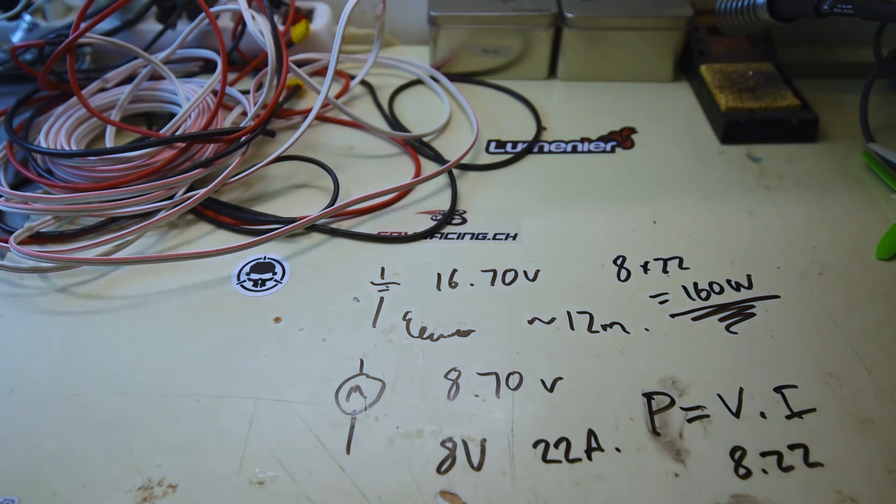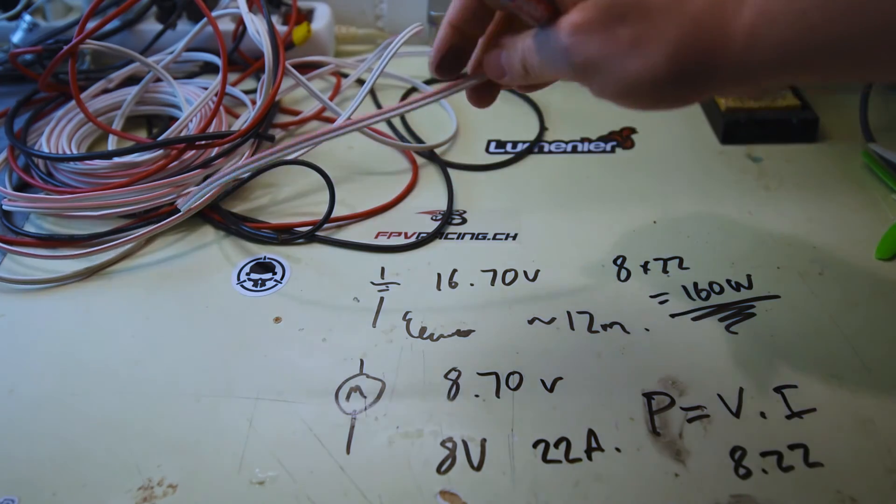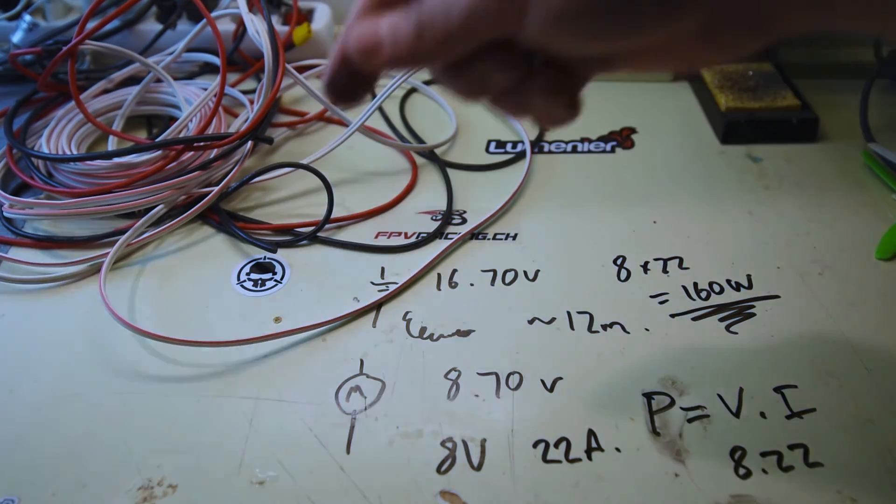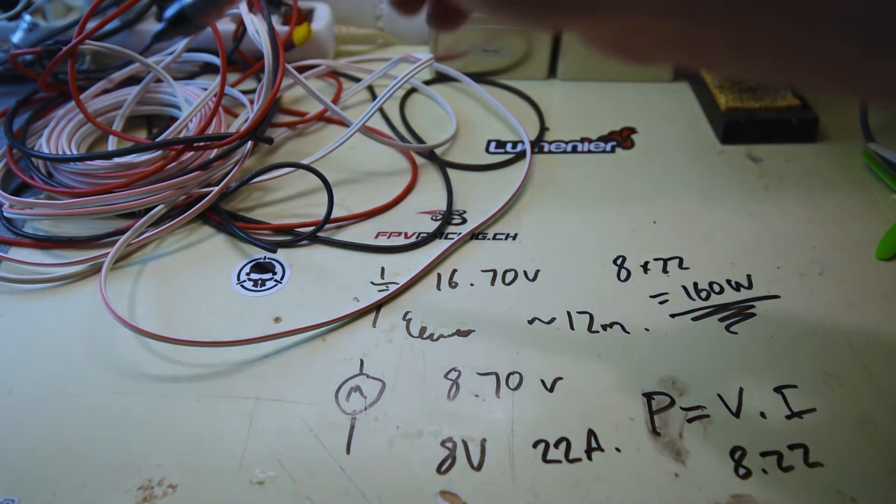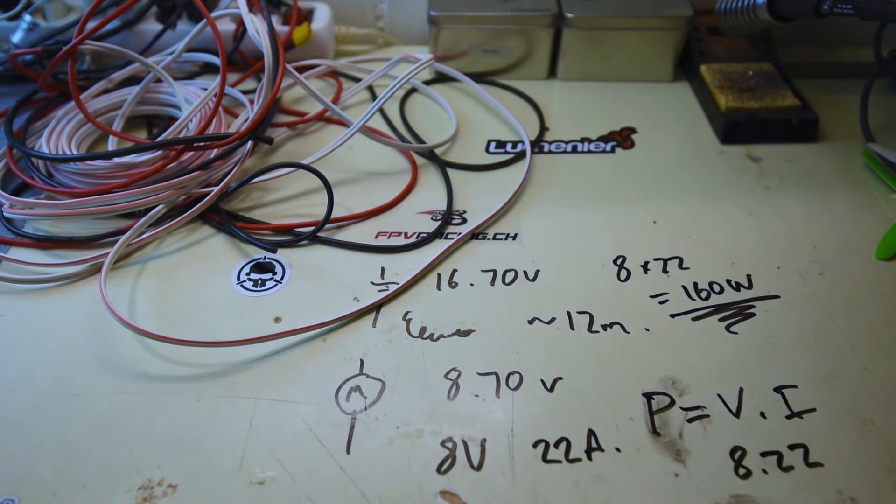So what happened? We created a 160 watt heating element. Because when I unplugged it, this wire was warm. This wire was warm. And no doubt, all that power is being dissipated as heat in the wire, because the wires aren't thick enough to carry all the power. And therein lies the fundamental problem of tethered drones.